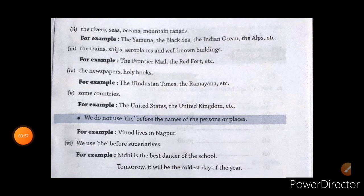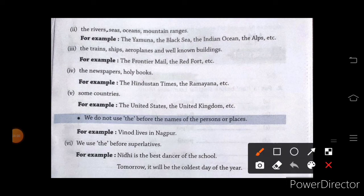Next one, the rivers, seas, oceans, mountains. In sab ke names ke aage bhi hum the ka use karte hain. Next one, trains, ships, aeroplanes, and well-known buildings. The Frontier Mail, the Red Fort, the Taj Mahal.